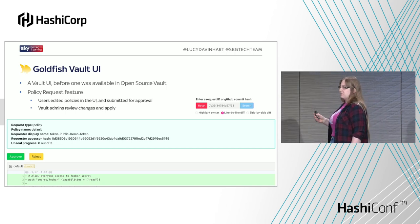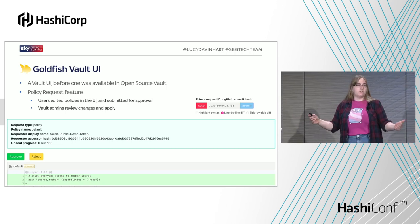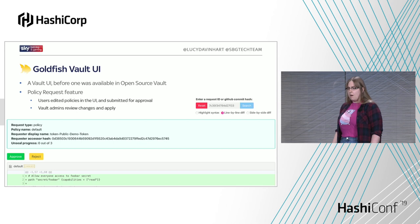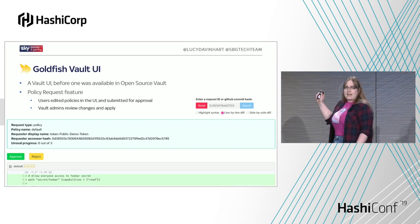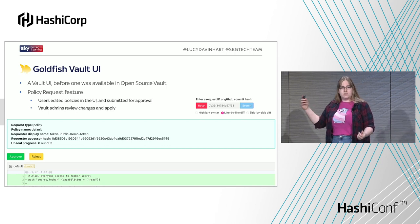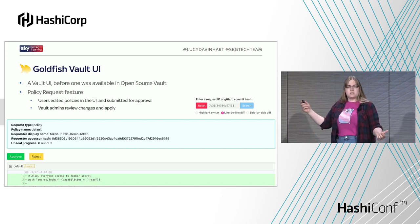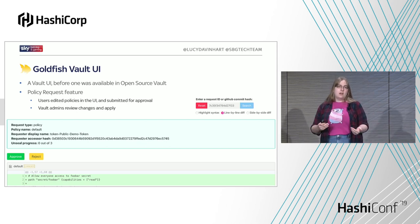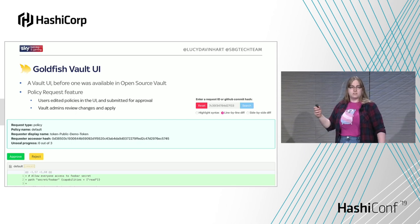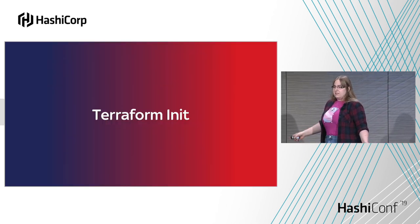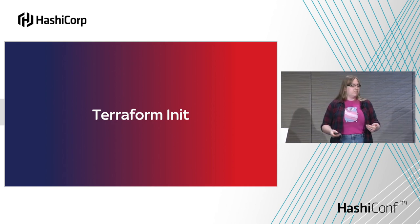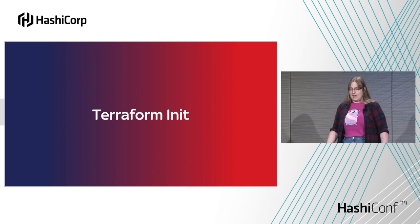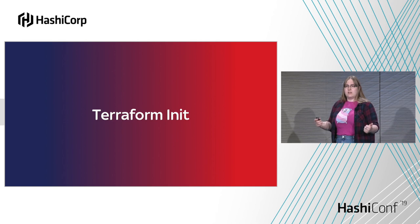To tackle the problem of making changes to Vault, we deployed a tool called Goldfish — a Vault user interface that existed prior to the open-source version of Vault having one. Our users love user interfaces, but that wasn't the main reason we deployed it. The reason was it had a policy request feature. Users could go in, edit policies or add new ones, and since they don't have write access, those requests would come to us. Assuming they haven't asked for something silly, we approve it. With those two things in place, we had enough to get Vault into production.